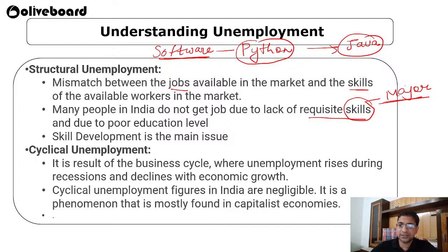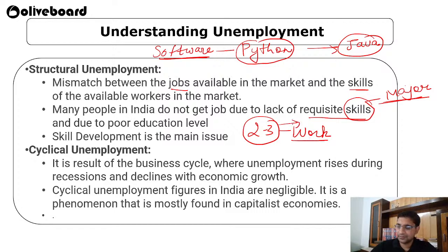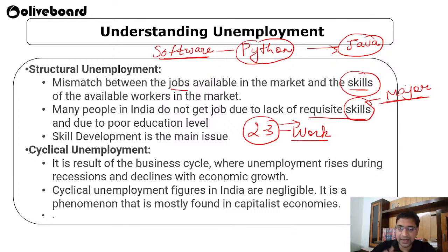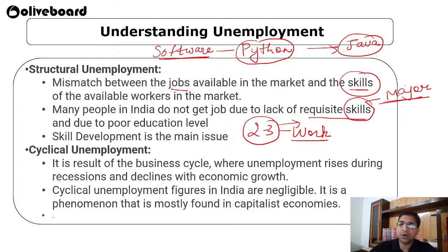Companies give two to three months of training to new hires to make them work. There is a total skill mismatch between educational institutions and the market. The market, educational skills, and the type of jobs being created all need to match. We also have to make our workforce future-ready. That is why the New Education Policy has come, where from Class 8 onwards children are taught various kinds of skills, so that by the time they reach Classes 9, 10, 11, or 12 they are skilled in one or other areas.